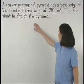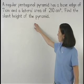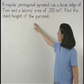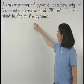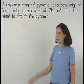A regular pentagonal pyramid has a base edge of 7 centimeters and a lateral area of 210 square centimeters. Find the slant height of the pyramid.